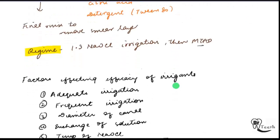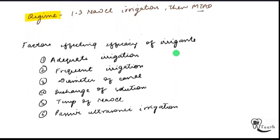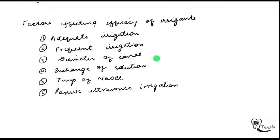Factors affecting the efficacy of irrigants include: adequate irrigation is necessary; frequent irrigation; the diameter of the canal and exchange of chemical solution; temperature of NaOCl — increasing temperature improves efficacy; and passive ultrasonic irrigation.